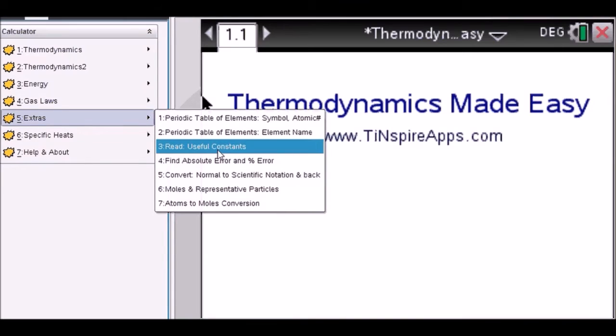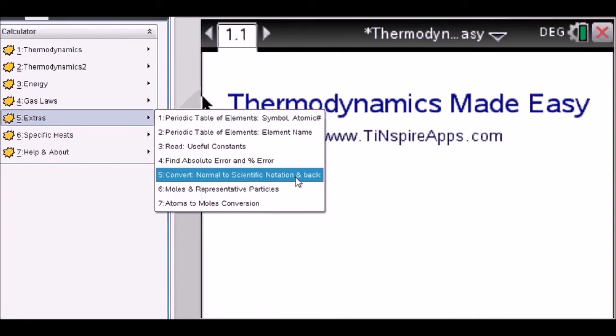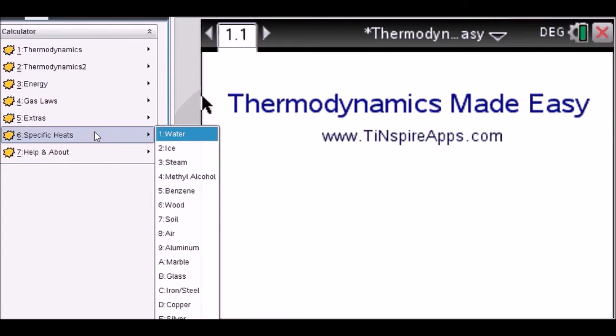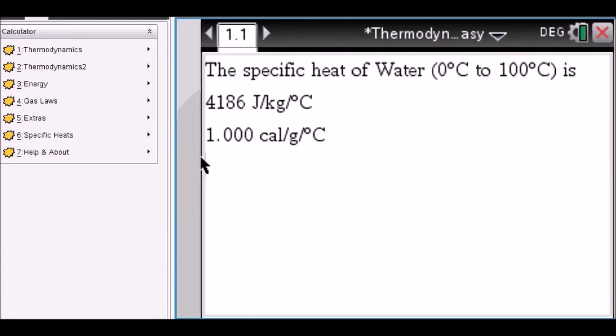Useful constants can be viewed here. Absolute percent error, conversion, scientific notation and back. And also very important, specific heats can be pulled up. So let's for example look at water. We have the specific heat here for water using two different dimensions.